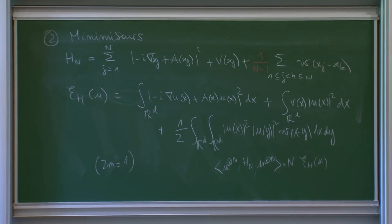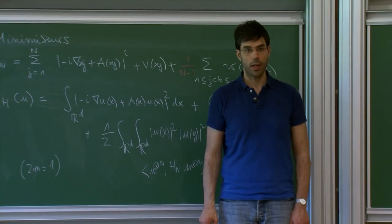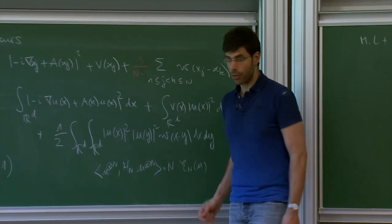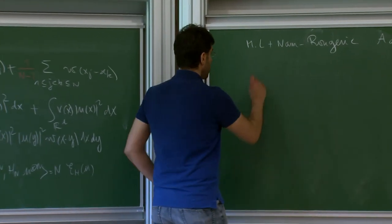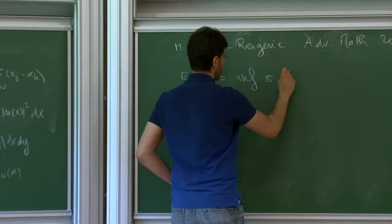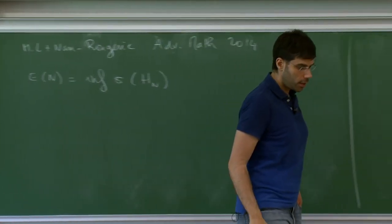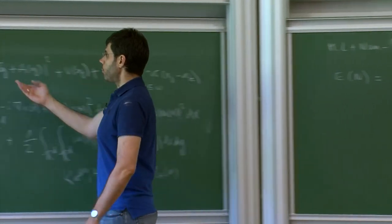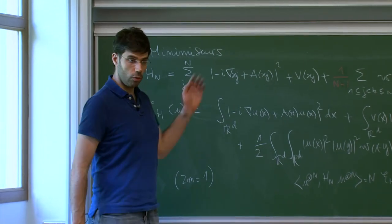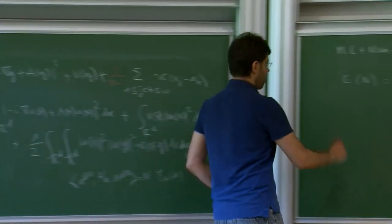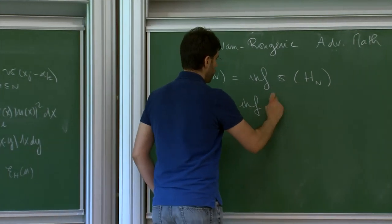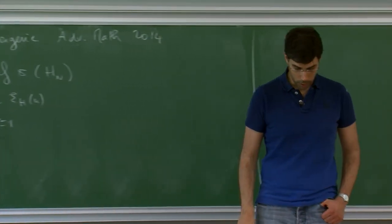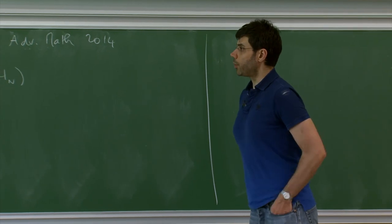I recall that λ behaves like 1/N, and to simplify some calculations — without changing anything — I take exactly λ = 1/(N−1). The calculation of the energy of a factorized state u^{⊗N} gives exactly N times the Hartree energy of u. The question: what is the link between minimizing the N-body energy (i.e., the ground state energy of H_N) and minimizing this nonlinear energy? We introduce E(N) = inf spec(H_N) — remember we restrict to symmetric functions — and e_H = inf of the Hartree energy over normalized u.